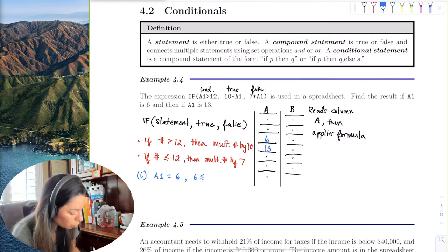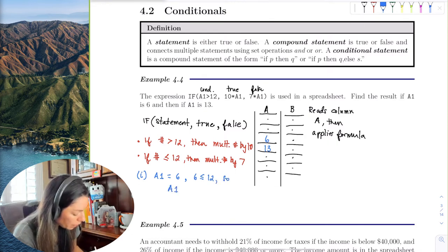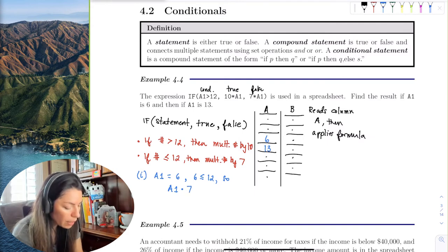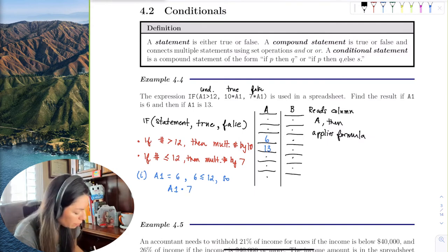So A1 is going to be multiplied by 7, and so this means that we'll have 6 times 7, which is 42.